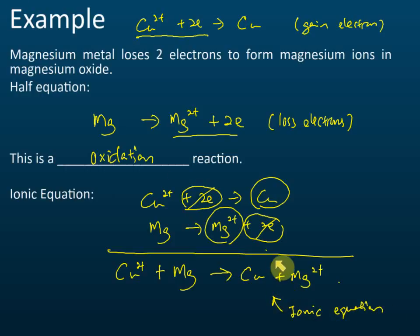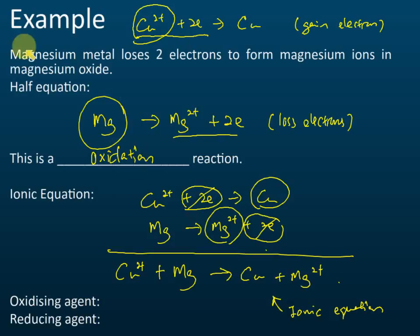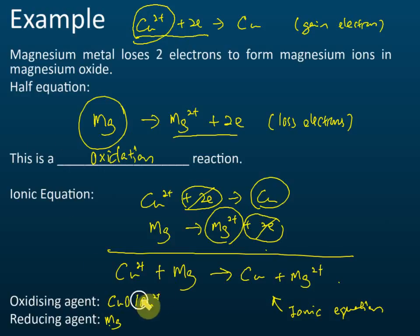That is how we identify oxidation and reduction through electron transfer, how to write the half equations, and how to combine the half equations to make the ionic equation. In the exam, they may ask you to write half equations, write ionic equations, state whether oxidation or reduction occurs, and identify which substance is the oxidizing agent and which is the reducing agent.